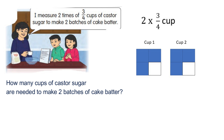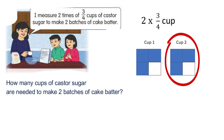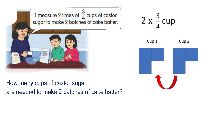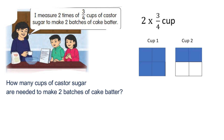Draw a diagram to represent three over four. We have two three-over-four cups. Draw the diagram to represent the two cups. This represents cup one, and this diagram represents cup two. Now move one part of cup two to cup one.